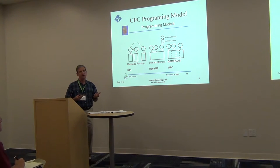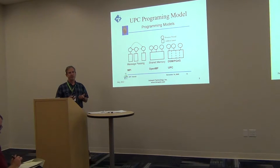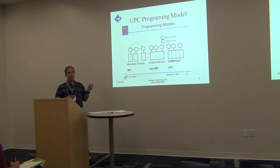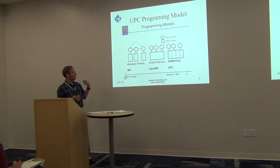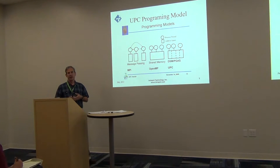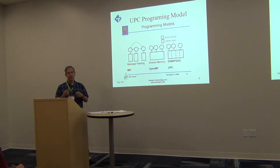A common question about UPC is how it compares to other parallel programming solutions. MPI — the Message Passing Interface — is the big name in supercomputing. MPI is a communication library called through normal procedure calls where the programmer must make explicit calls to pass data between processes. This is called two-sided communication, with cooperation required on both sides, and it's point-to-point.